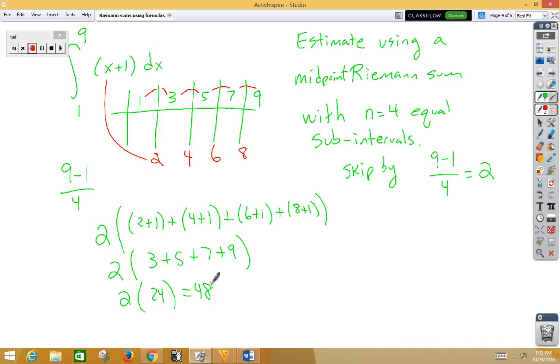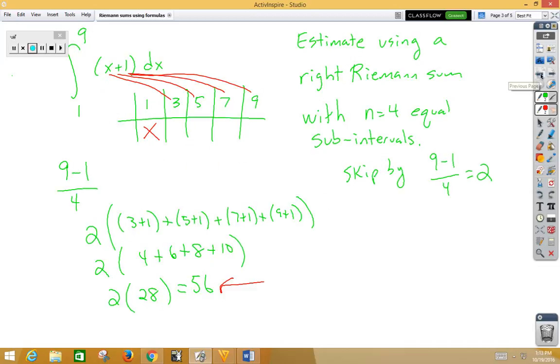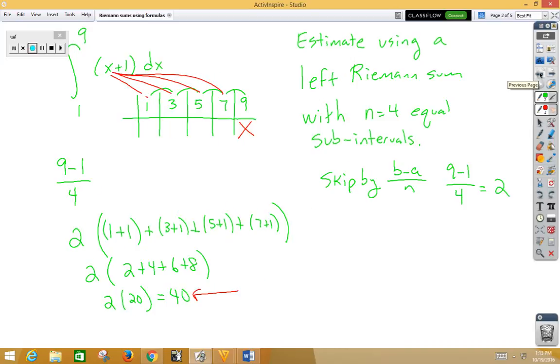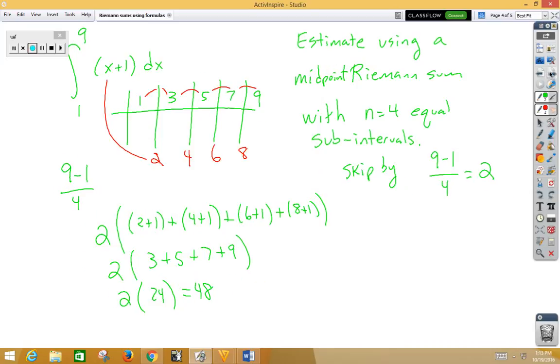Now, your midpoint approximation should be better than your left or right. Notice that 48 is smaller than the 56 we got in our right Riemann sum, larger than what we got with our left Riemann sum. So our midpoint approximation of 48 would be a better estimate than either our left or our right Riemann sum.